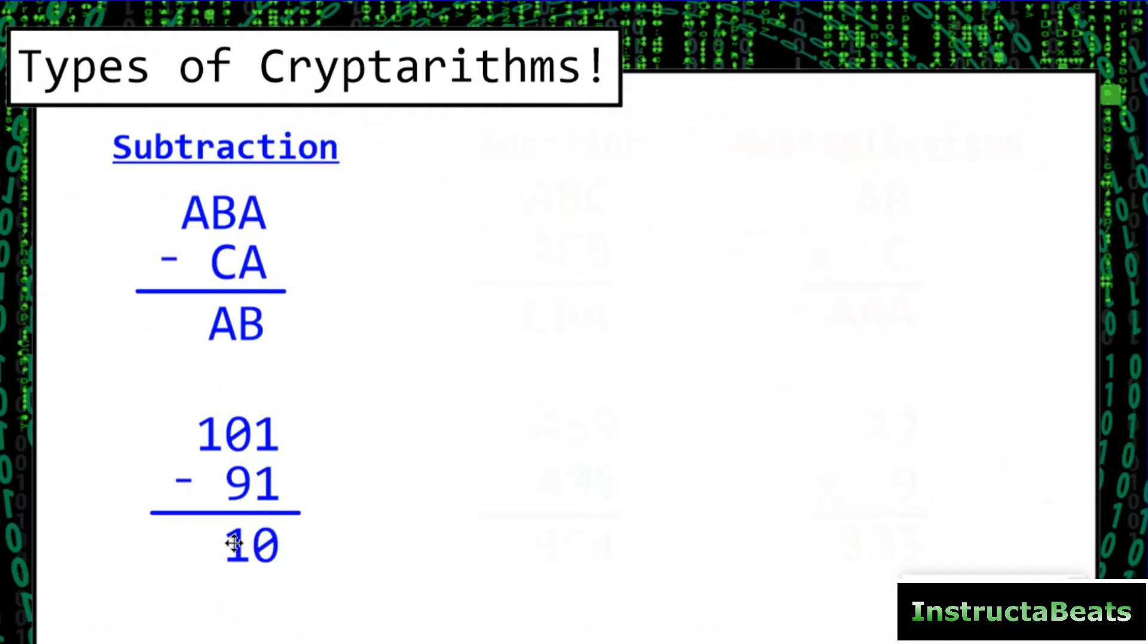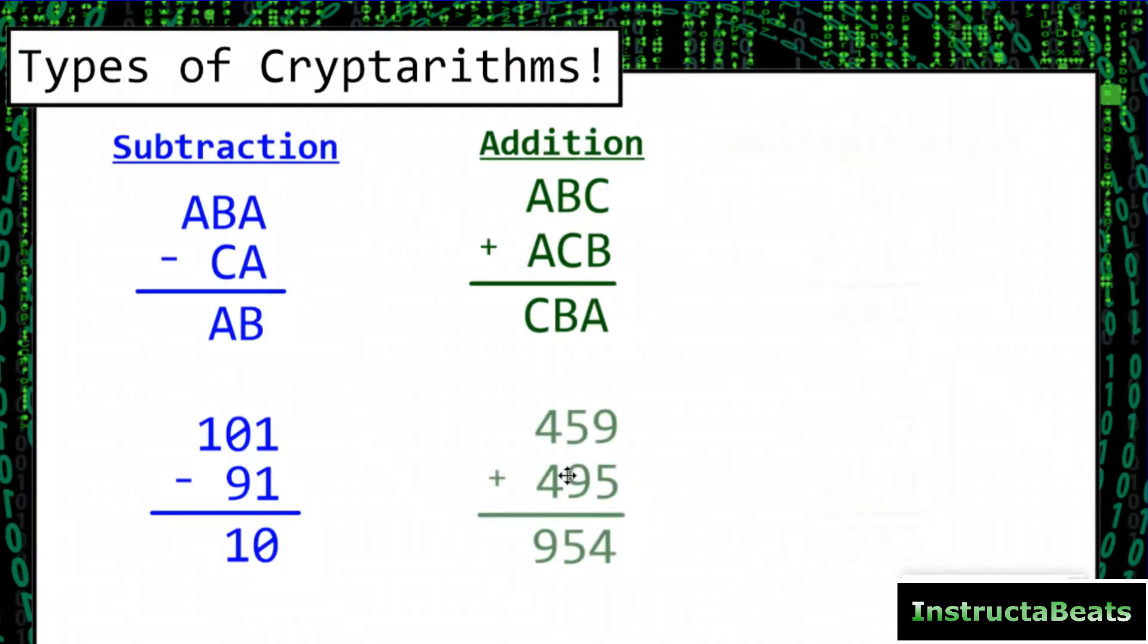If you're like, wait a minute, how did you get there? Check out our video on how to solve subtraction cryptorhythms. We can't give you everything in one video, then we don't get the views. You might see an addition cryptorhythms. ABC plus ACB equals CBA, and in this case, actually, if you solved it, this is 459 plus 495 equals 954. You can notice that all the A's are 4, all the B's are a 5, and the C is a 9.